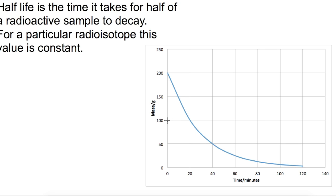So if we go down to 100, trace a line over until you hit the graph, and then trace a line down, that will give you your half-life. You can see that the time taken to get from 200 to 100 is 20 minutes.